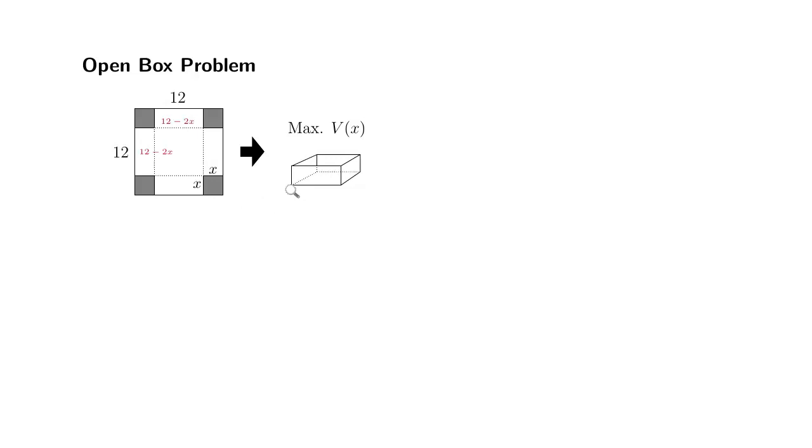Alright, so we know that the height is going to be X. Right here, all we did was we pulled the 2 out of 12 minus 2x. You get 2 times quantity 6 minus X. And this side is exactly the same.